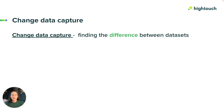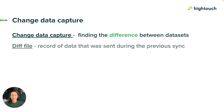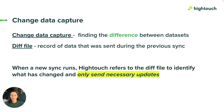Whenever a new sync is triggered, Hightech compares the previous sync run before sending the next data set. The comparison shows what has changed in the source data since the last run. The process of finding the difference between datasets is commonly referred to as diffing or change data capture. Hightech keeps a record of the data that was sent during the previous sync — this record is called the diff file. When a new sync runs, Hightech refers to the diff file to identify what has changed.